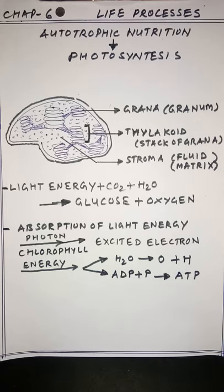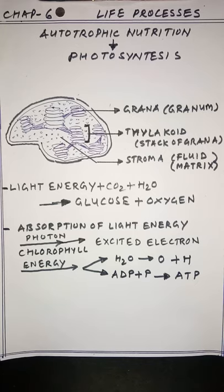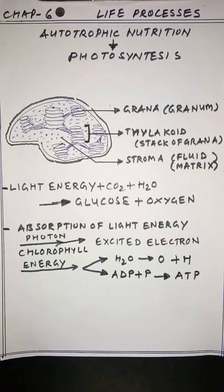Autotrophic mode of nutrition involves the process of photosynthesis, by which organisms produce energy in the form of ATP, glucose, or carbohydrates. Green plants and some bacteria carry out photosynthesis. Water is absorbed from the soil along with inorganic materials like nitrogen, phosphorus, magnesium, and iron, conducted to the leaves by xylem and phloem — the conducting tissues — which are the site of photosynthesis.